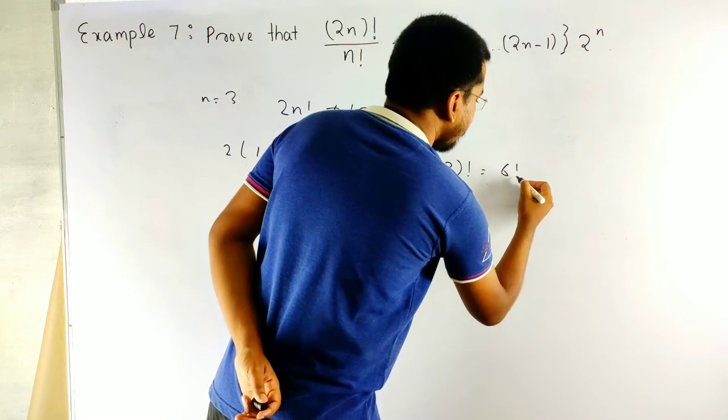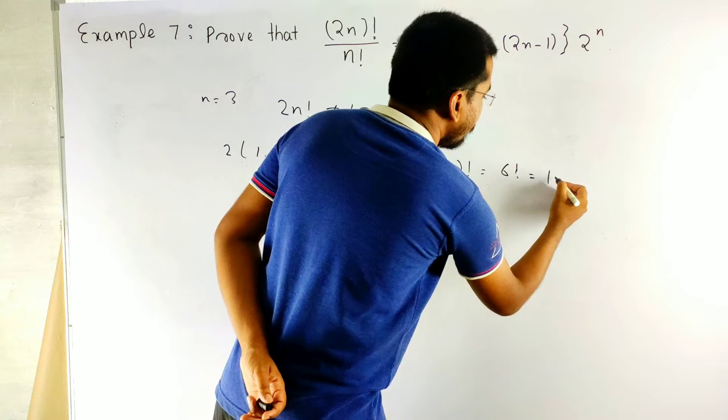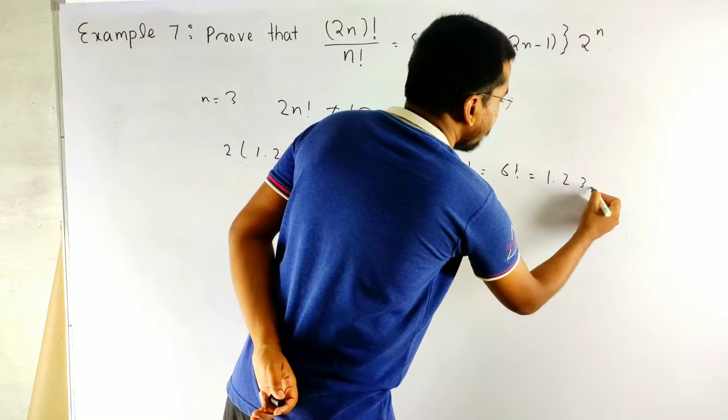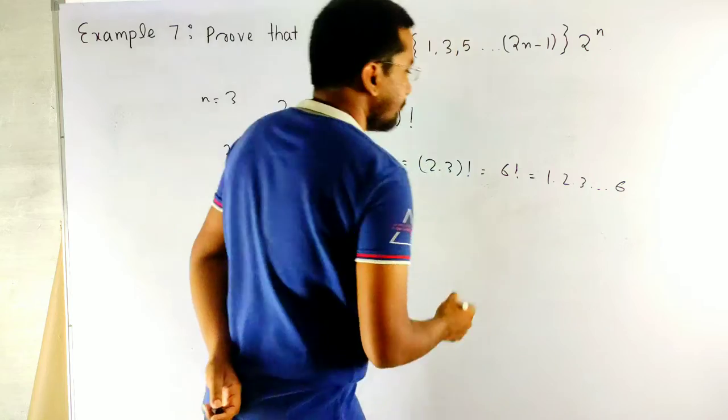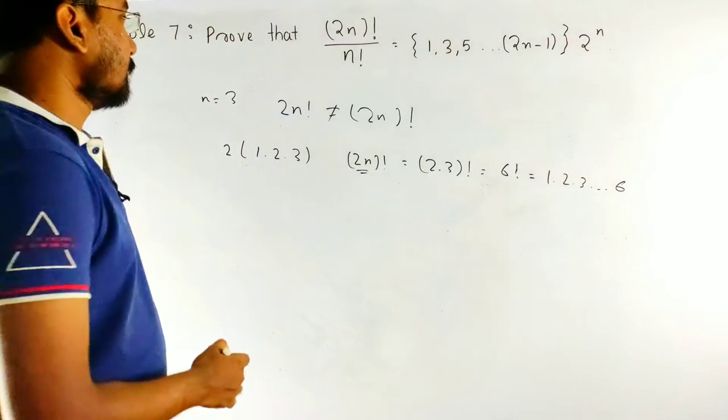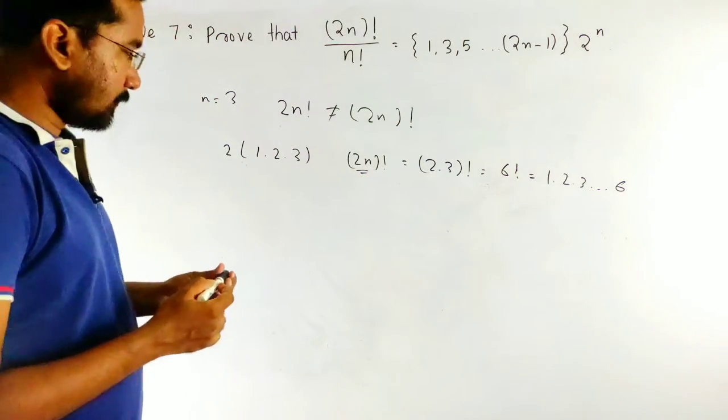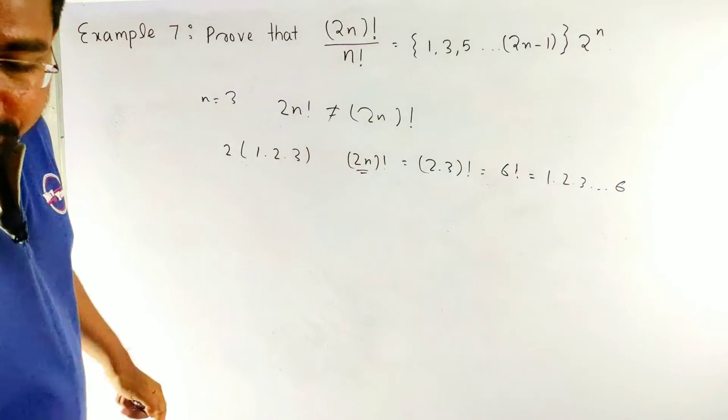6 factorial, as you know, 1, 2, 3 up to 6. We have to be cautious about that.